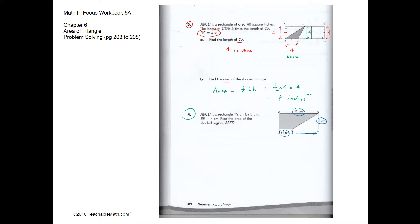The remaining base for the unshaded triangle is 8 centimeters. The area of the unshaded region is half of 8 times 5, which equals 20 centimeters squared.